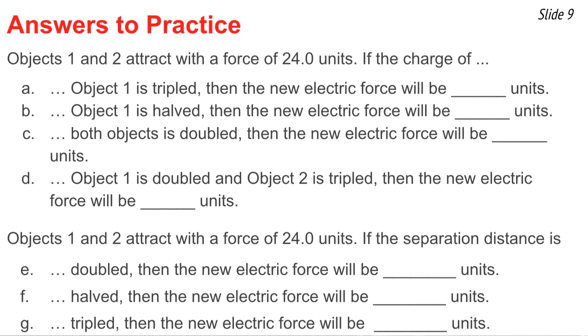Question A has an answer of 72 units, because if you triple a charge, you will triple the force. So 24 times 3 is 72.